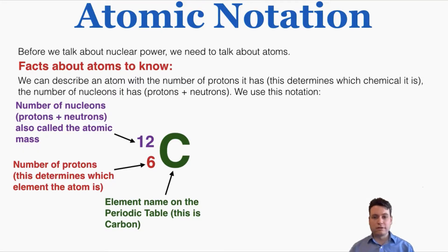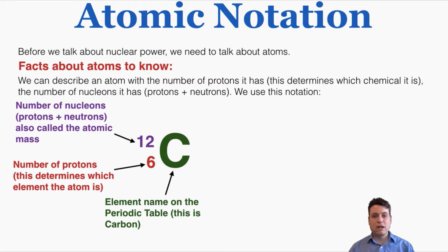If we know the number of nucleons the atom has, we have a rough idea of the mass of the atom. On the bottom left, we write the number of protons the atom has, and this determines which element the atom is. Carbon atoms can have 12, 13, or 14 nucleons, but they always have to have six protons. If you have more than six protons, you have a different element — it's no longer carbon.